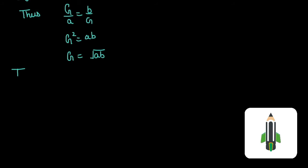Thus geometric mean of A and B is equal to under root AB and it can be written as AB raised to the power half.